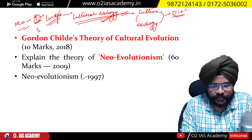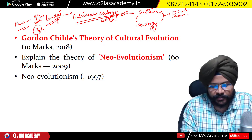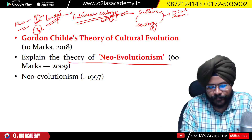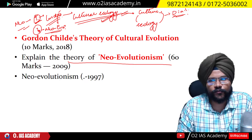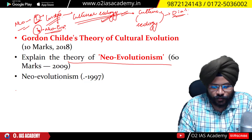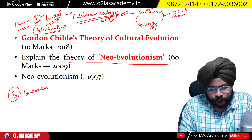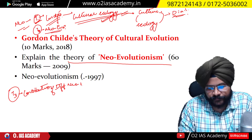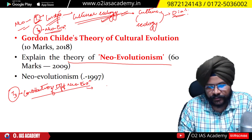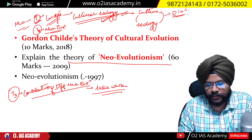The second theme that is asked is the holistic question — write a short note or explain the theory of neo-evolutionism. The third theme that has been asked is the contribution of different neo-evolutionists — for example, take the case of Leslie White. Questions have been asked from Leslie White's approach or Leslie White's contribution.